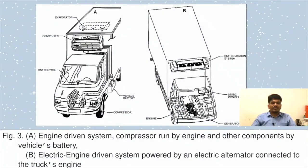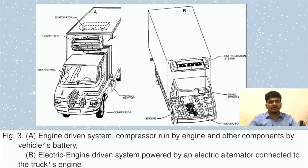Here we can see through figures the engine-driven system, where the compressor is run by the engine and other components by vehicle batteries. The second system is the electric engine-driven system, powered by an electric alternator connected to the truck's engine. So there are two systems shown here.